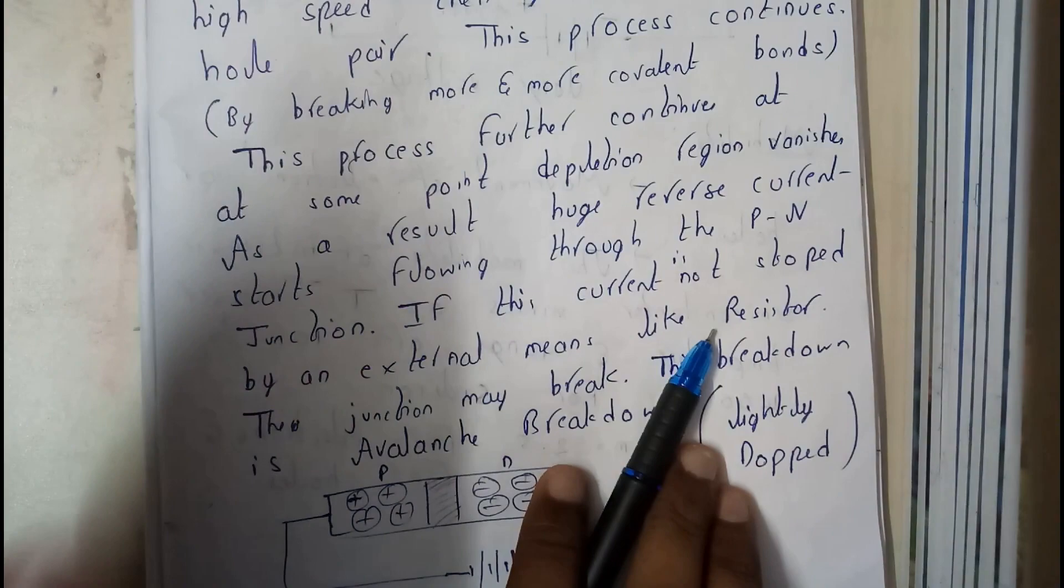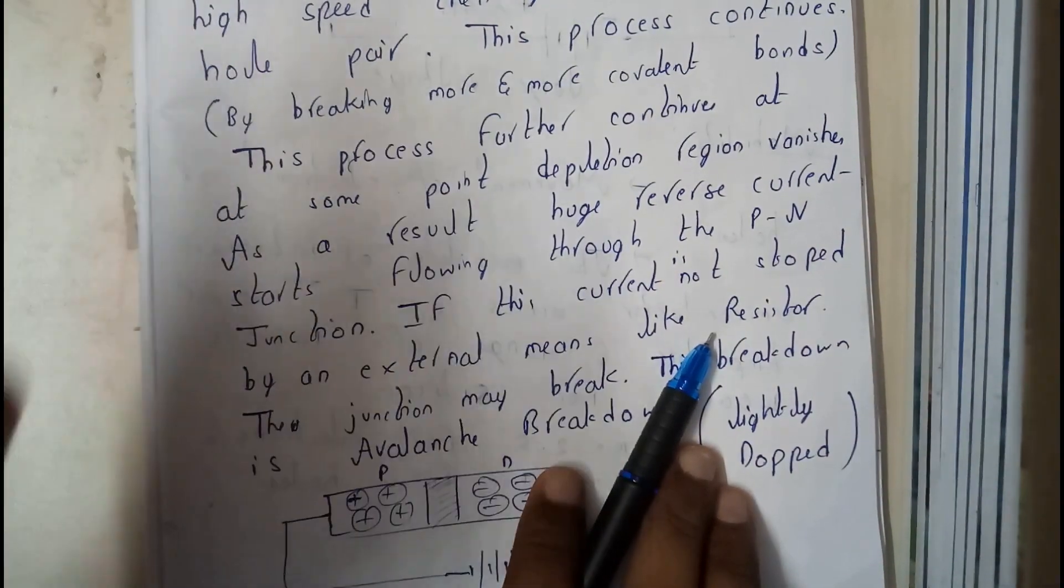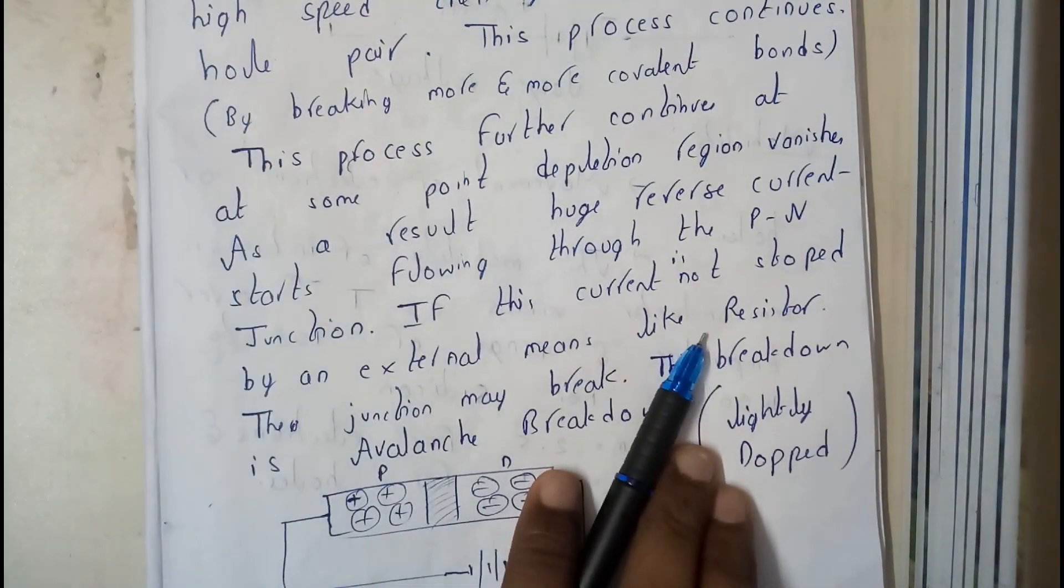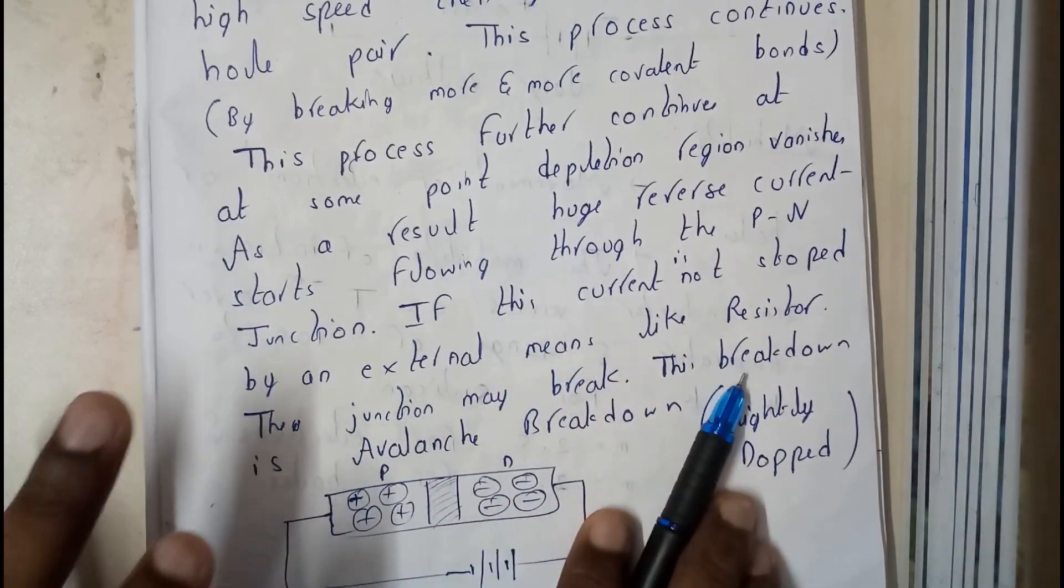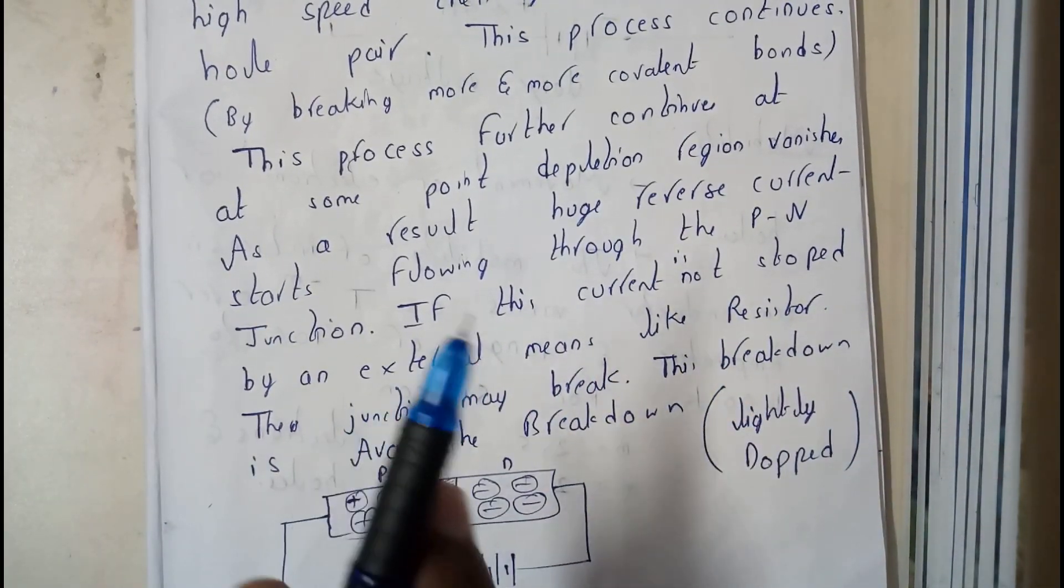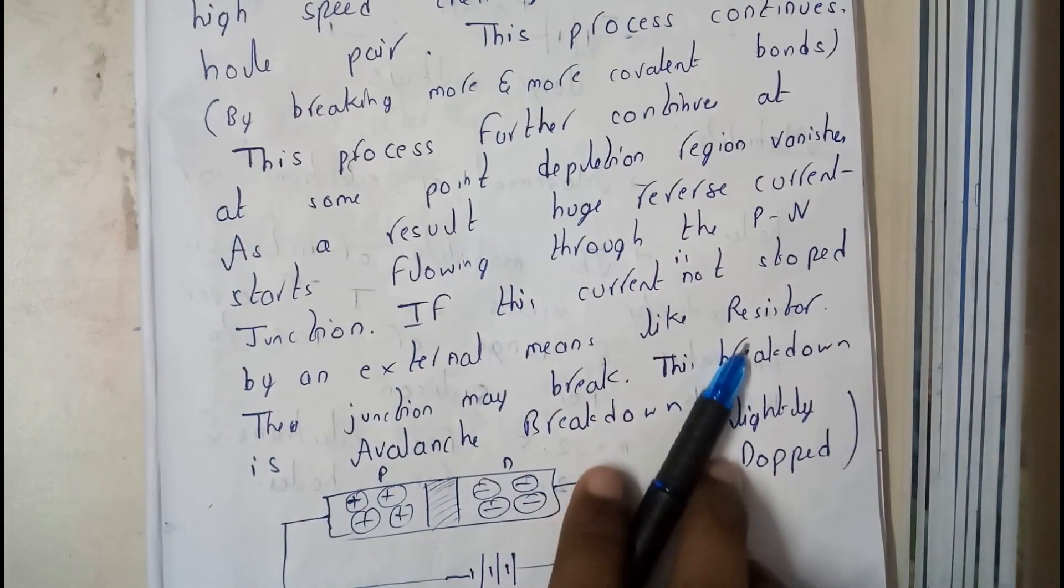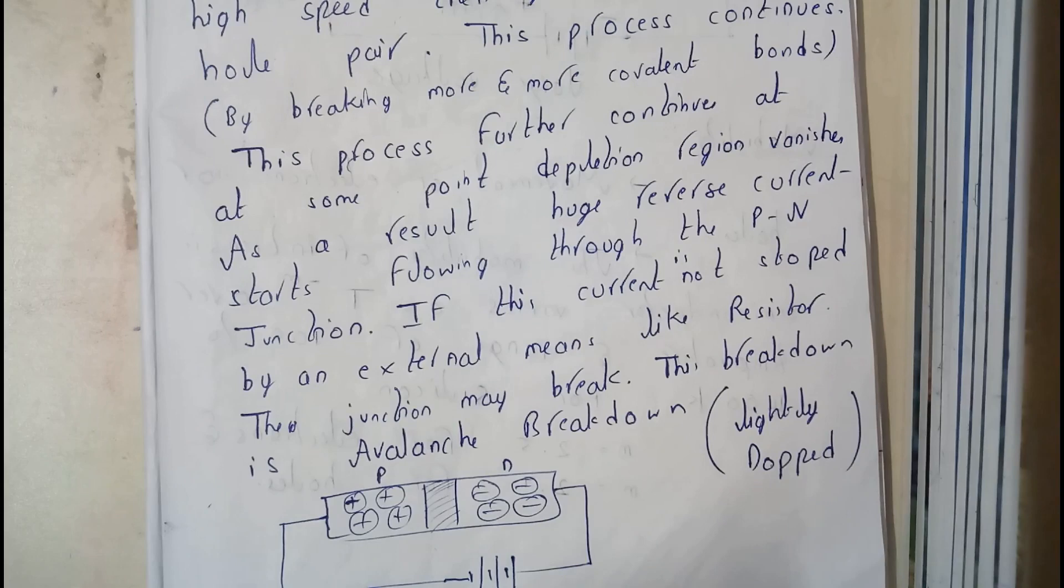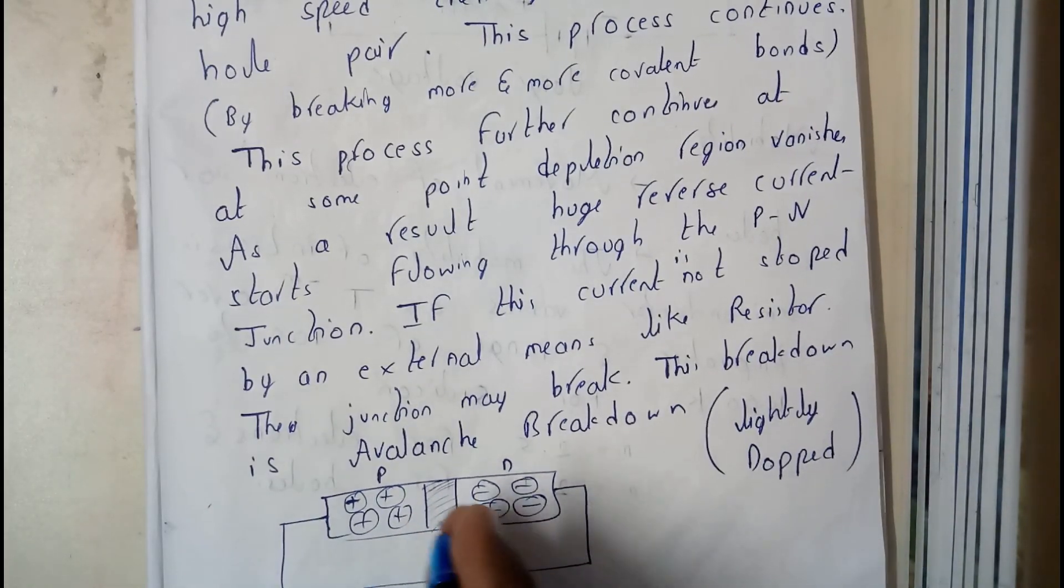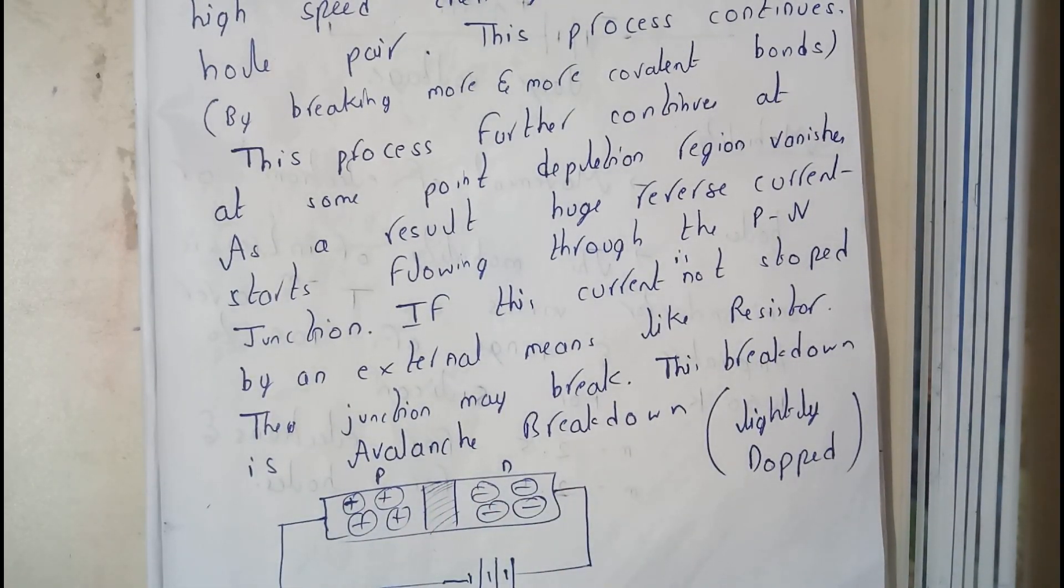If the current is not stopped by an external means like a resistor, I hope everyone knows that to control the current we'll be using resistors. The junction breaks. This breakdown is called avalanche breakdown.